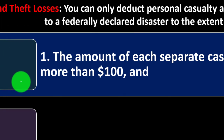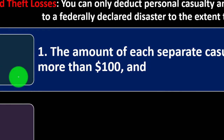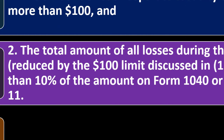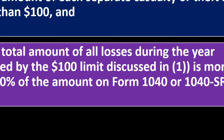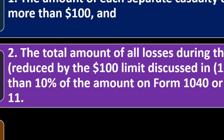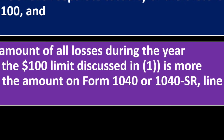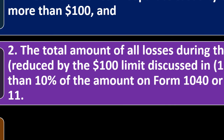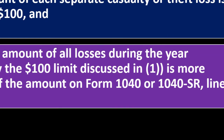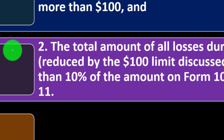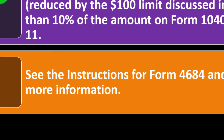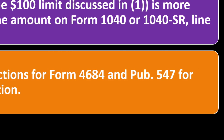There are two threshold conditions: number one, the amount of each separate casualty or theft loss must be more than $100; and number two, the total amount of all losses during the year, reduced by the $100 limit, must be more than 10% of the amount on Form 1040 or 1040-SR, line 11 — that's the adjusted gross income line, typically used when comparing to income levels.